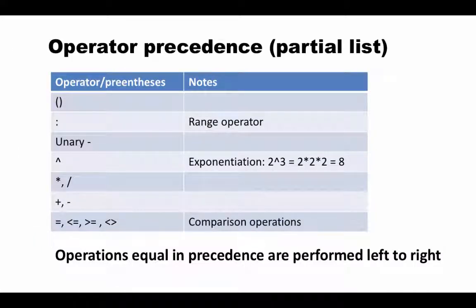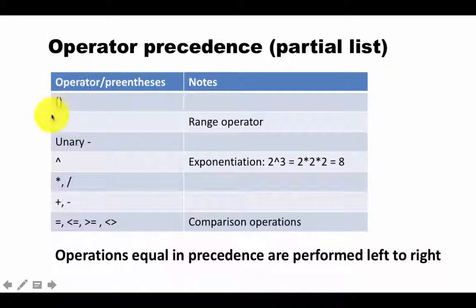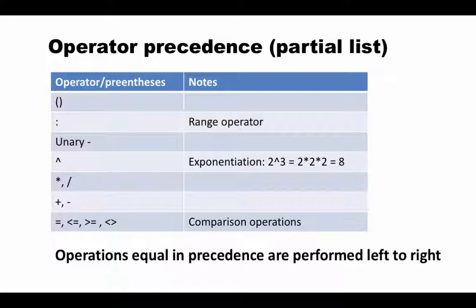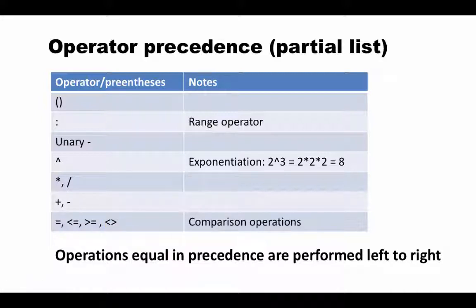When present, parentheses take precedence and are performed first, so our addition takes place first and then the multiplication gives the correct result. Here's a partial list of operator precedence: parentheses have the highest priority, followed by the colon operator for computing ranges, then the unary minus, then exponentiation, then multiplication and division, followed by addition and subtraction, and then equals and other comparison operators — which we'll look at later in the course.